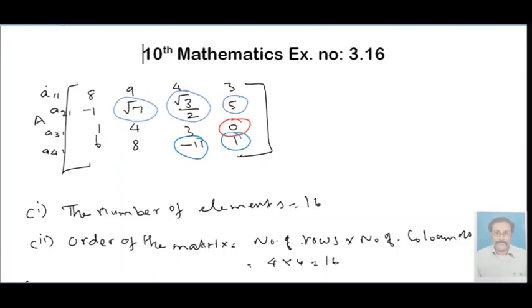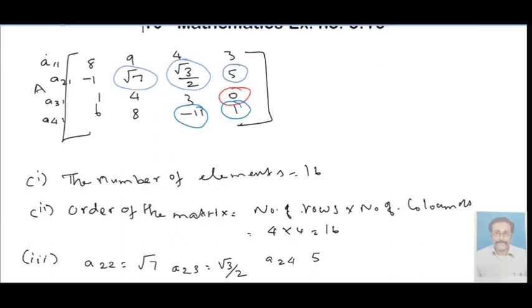First, the number of elements is 16. The order of the matrix is the number of rows times the number of columns, which is 4 by 4.